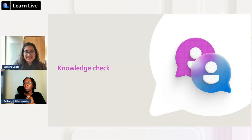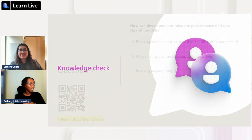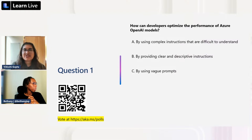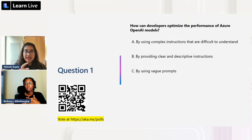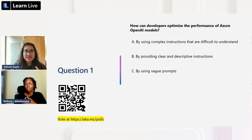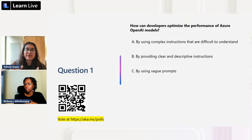Vidushi reminds everyone that RAG can be applied in everyday life with simple prompt adjustments. For example, when applying for jobs, give GenAI your current resume and the job description and ask it to highlight and reword parts of your resume to match the job description — effectively giving it additional data for a better cover letter or resume, without needing to implement it as a full project.